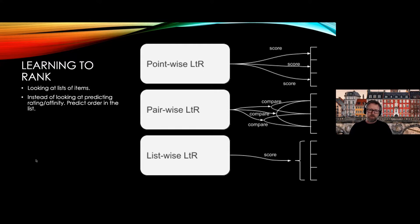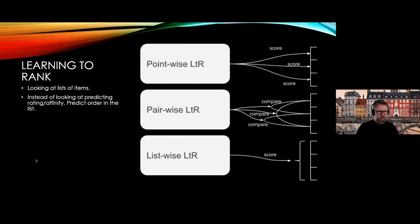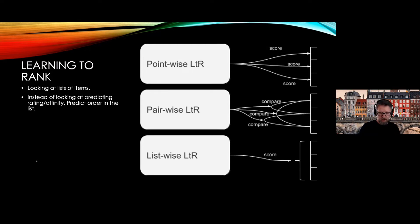When you do rating prediction, that's called point-wise learning to rank. Then you can do pair-wise learning to rank, where you compare two items at a time. Then list-wise, where you compare the full lists. For pair-wise there is Bayesian Personalized Ranking, which uses the matrix factorization model as a trainer and creates another function to optimize. If you've already done matrix factorization, BPR is a good next step — reach out if you're interested.